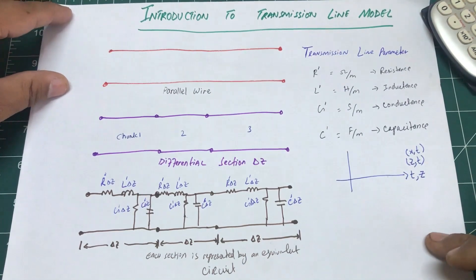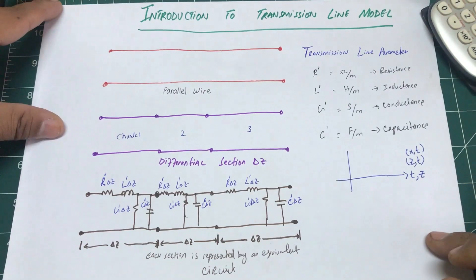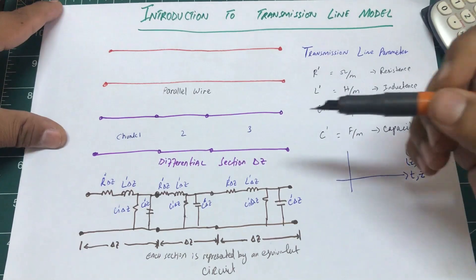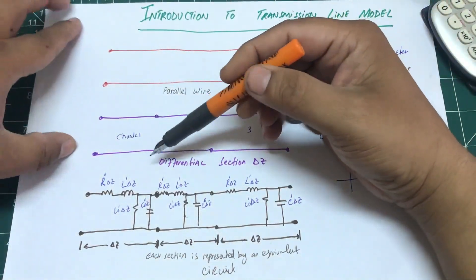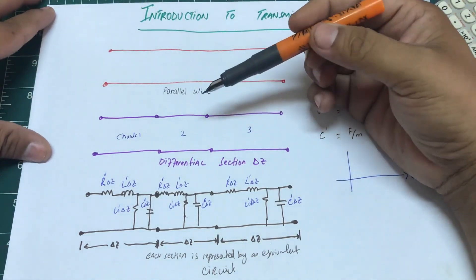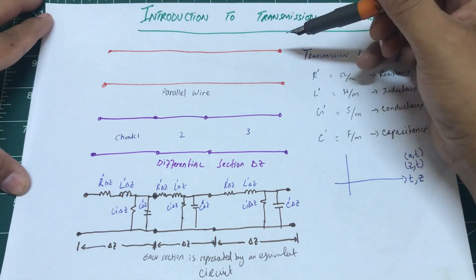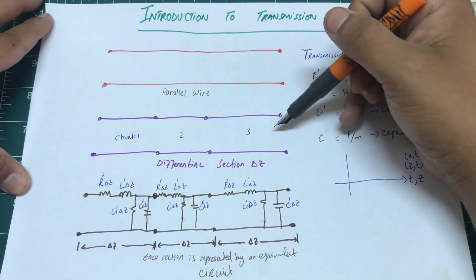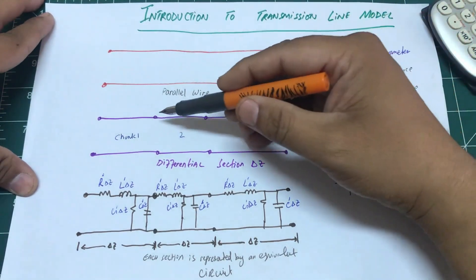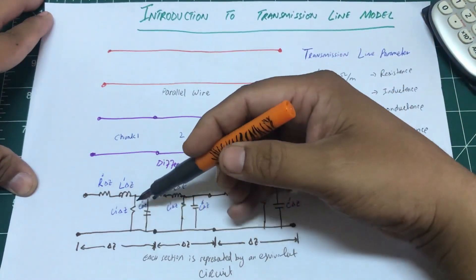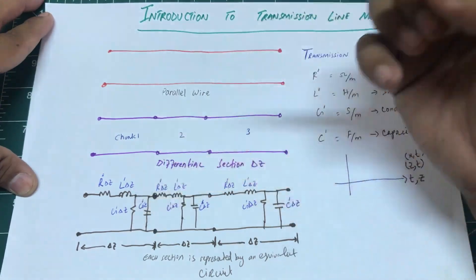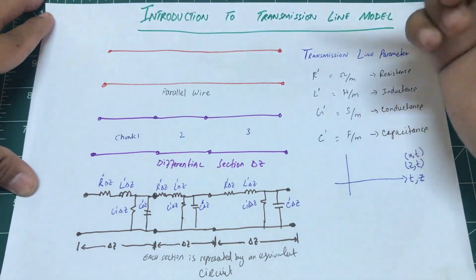It turns out that any piece of wire actually consists of a very complex circuit. Even a smaller chunk of that wire is a complex circuit, and that complex circuit actually consists of R, L, G, and C. So we've broken a 10-meter piece of wire into three chunks of 3.33 meters, and each chunk of wire has a behavior that looks like an RLGC circuit — consisting of resistance, capacitance, and inductance.